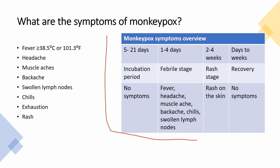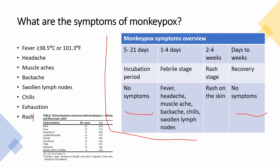This table shows the incidence of monkeypox symptoms based on the 2003 outbreak in the United States. As you can see, 83% of patients experienced a rash, about 73% had fever, and the other incidences are shown in the table.